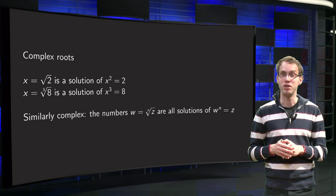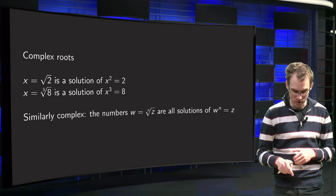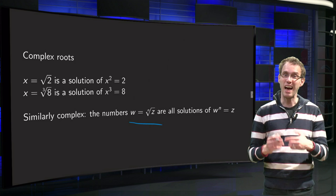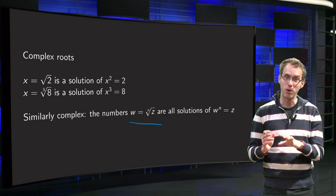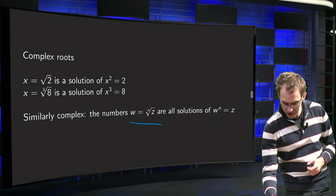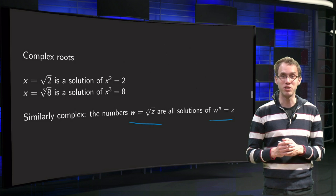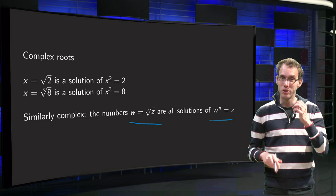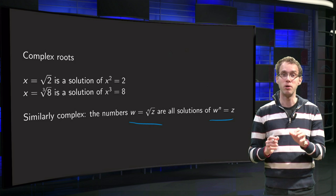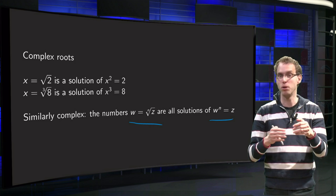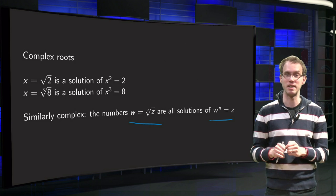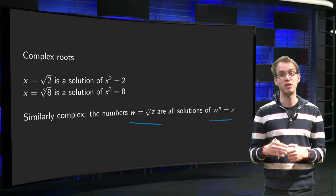That is how we will define our complex roots as well. The complex number w equals the nth root of z, some other complex number, means that w is the solution of the equation w to the power n equals z. So you know z and you are looking for w — you want to solve equations like w squared or w cubed equals some known complex number z. That is the way you can find your roots.